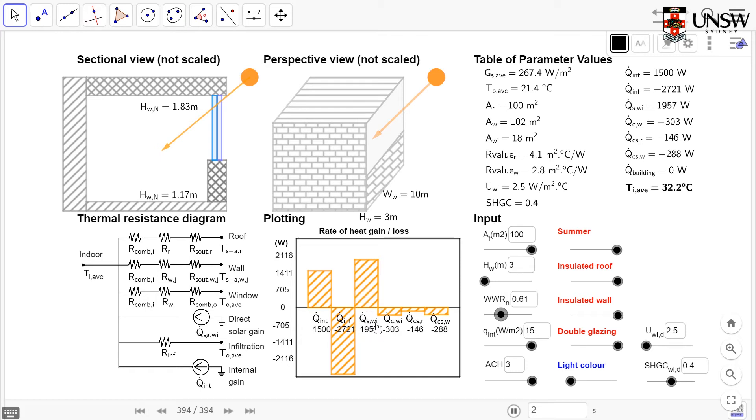And then you have your solar gains through your window, your conduction losses through the window, or conduction gains through the window. This is just an average for the months. So you can see that in the summer months, we have conduction losses through the window.